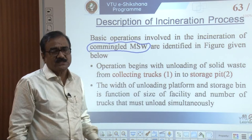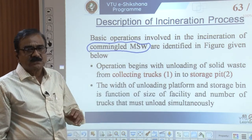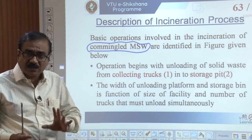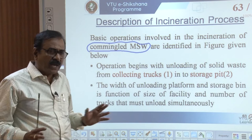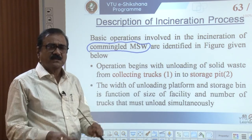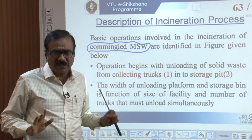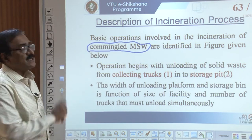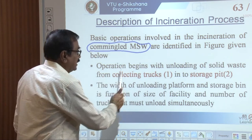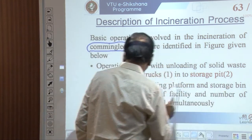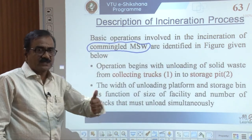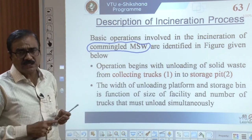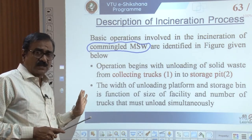The basic operations involved in the incineration of commingled municipal solid waste — that is mixed solid waste not subjected to any significant processing, with plastic, paper, iron, glass, and everything present — begin with the unloading of solid waste from the collection truck. The truck comes from the previous processing station and unloads onto the platform, which is then unloaded into the storage pit.